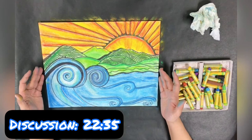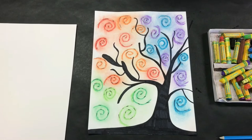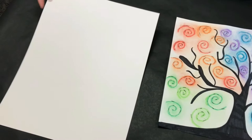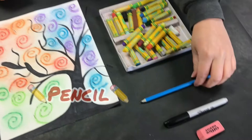Now we're going to go ahead and move on to making our swirly tree, which is our last activity. For this activity, you're going to need a piece of cardstock, oil pastels, a pencil, a permanent marker, and an eraser. Let's get started.